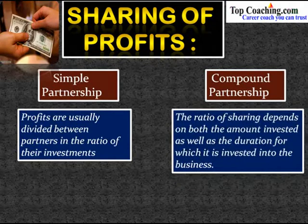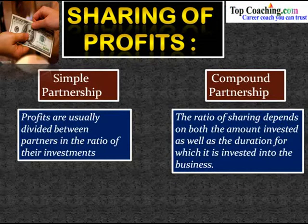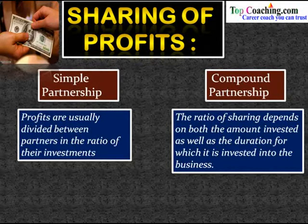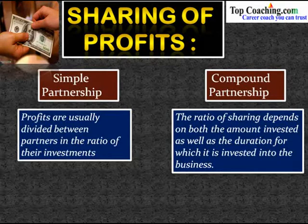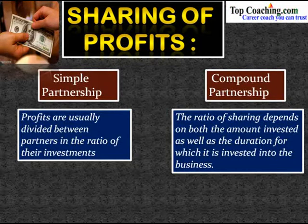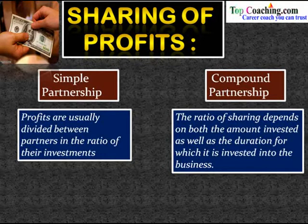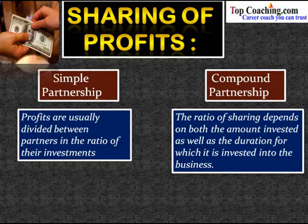In a compound partnership, the period of investment varies between partners, so the ratio of profit sharing depends on two factors: the amount invested and the duration for which it is invested. The profit share is proportional to the product of the amount invested and the time for which it is invested.